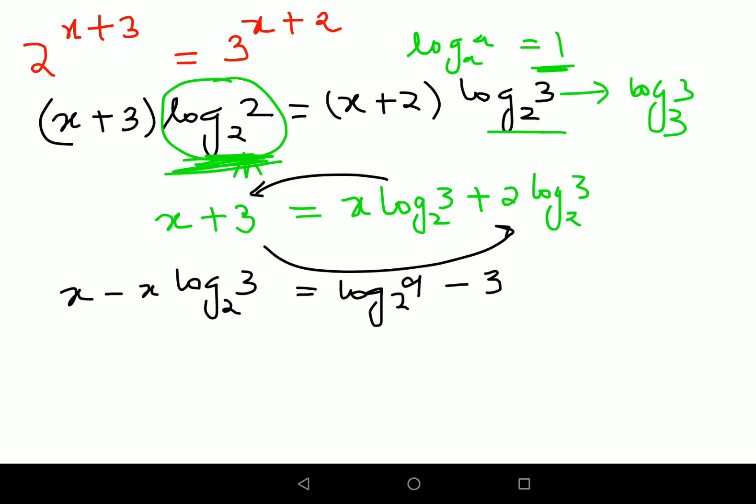Now what we'll do is we'll take x common, so what we'll get is 1 minus log of 3 to the base 2 equals, this will remain as it is, log of 9 to the base 2 minus 3.